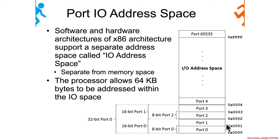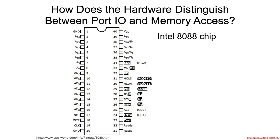Each of these ports is ultimately going to be mapped to some sort of peripheral device, some other piece of hardware. An interesting and relevant question is how does the hardware actually distinguish between PortIO and memory access? The answer is that way back on the Intel 8088 chip, there was this IO pin, which would allow the processor to understand whether a particular access was ultimately destined for memory or for PortIO.